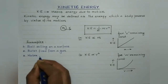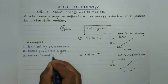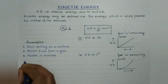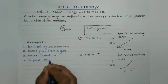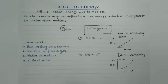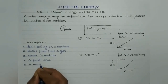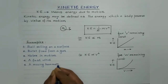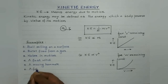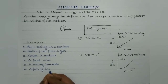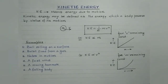Third, water in motion is an example where the body possesses kinetic energy. Fourth, a fast wind — moving air — possesses kinetic energy, which may be used to rotate turbines or in the functioning of windmills. Fifth, a moving hammer possesses kinetic energy as it drives a nail into a wall against the resistance offered by the wall. Sixth, a falling body also possesses kinetic energy as it can break something on which it falls.